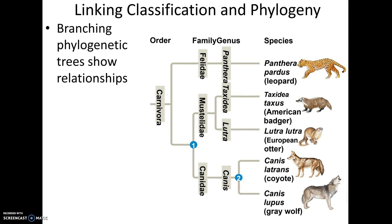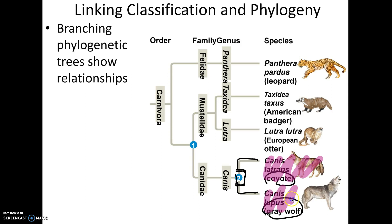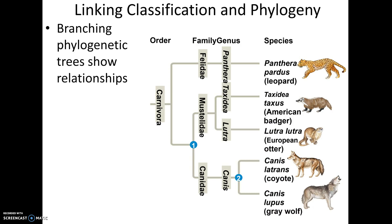Once we build these trees, they're supposed to show relationships between organisms. When a branch is really close — for example, the coyote and the wolf — the closer the branch, the more closely related they are. We would assume the coyote and the wolf are more closely related to one another than the coyote is to the otter. To find a common branch with the otter, you'd have to track back to point one, whereas the coyote and the wolf both track back to point two.